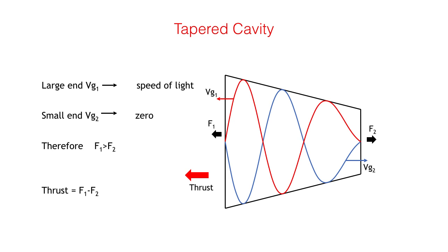In a well-designed cavity, the group velocity at the large end Vg1 approaches the speed of light, whilst that of the small end Vg2 approaches zero.